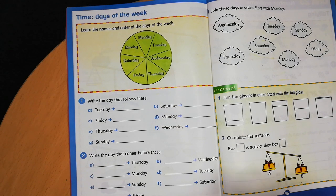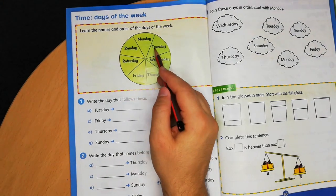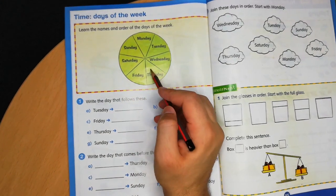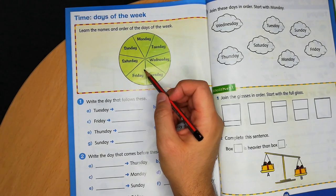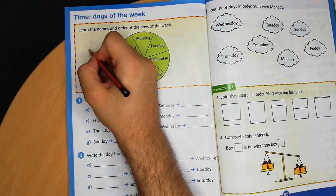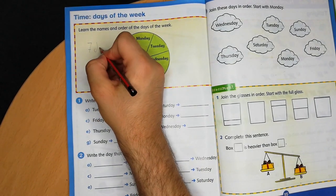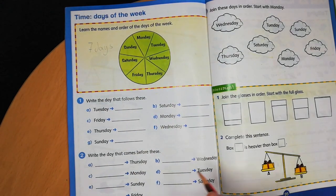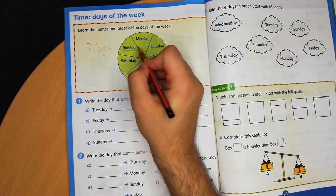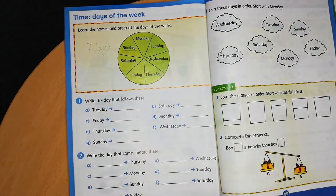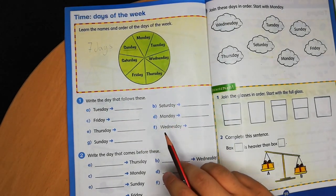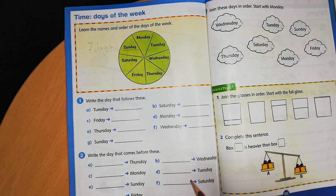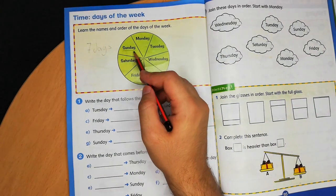We have seven days in a week — one, two, three, four, five, six, seven — so seven days. Each day has a name. Now of course we start on Sunday, not on Monday, so Sunday should be here. The whole thing should look a little different, but we'll always start on Sunday.